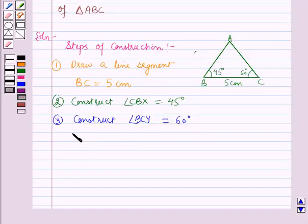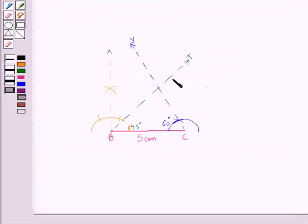Now let the lines BX and CY intersect at A. Let this point be A.